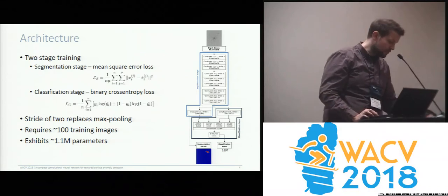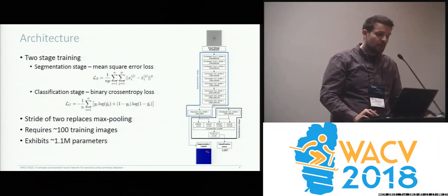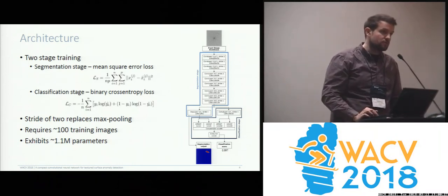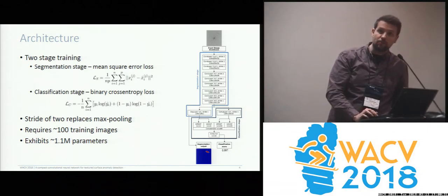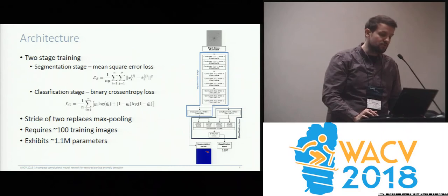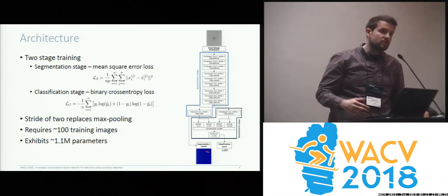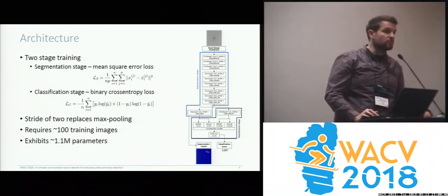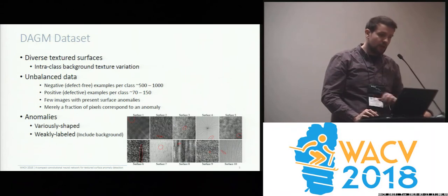In short, this is the proposed architecture. As you can see, it consists of a segmentation part and a classification part. In general, subsampling is replaced by convolutions with strides of two. It requires around 100 examples prior to slight augmentation and exhibits around 1.1 million parameters. The input is simply an image, and the output is a segmentation map along with a reliability score.